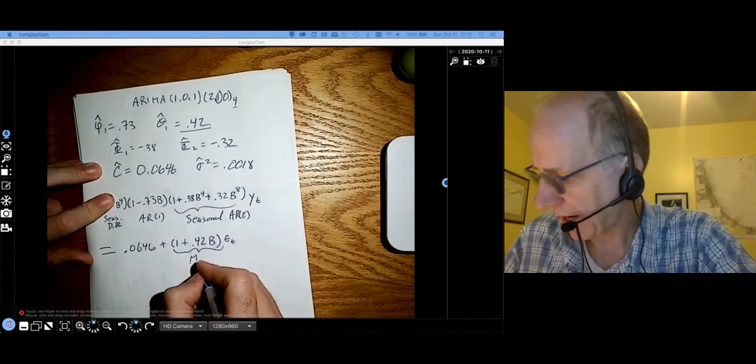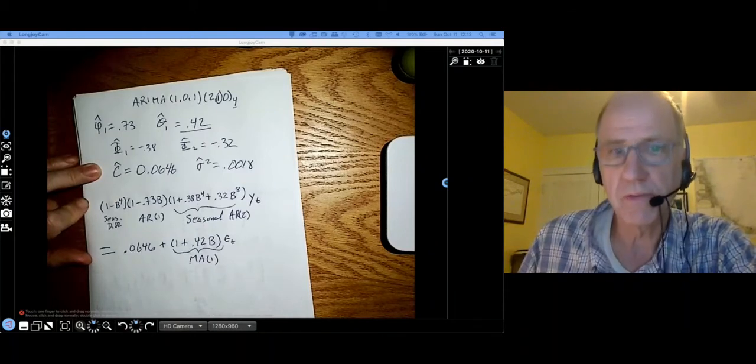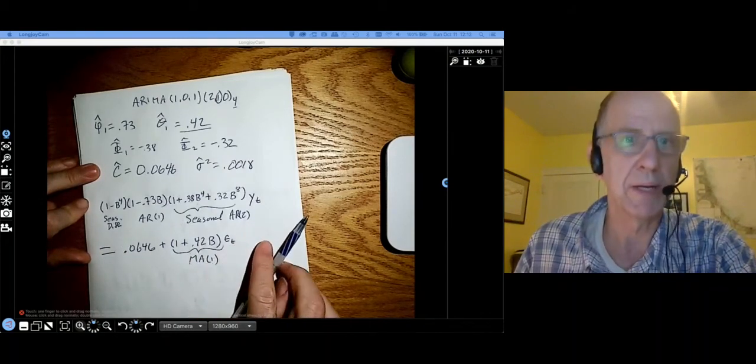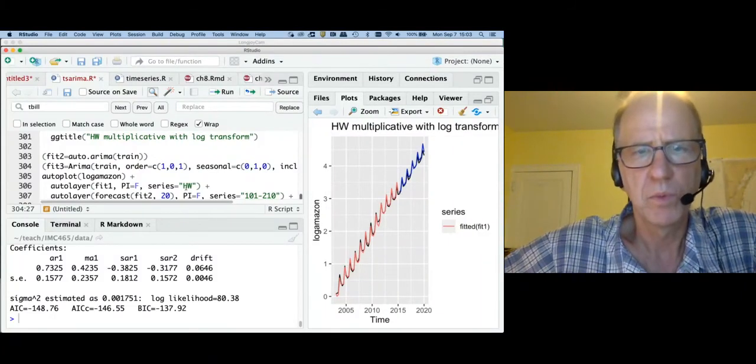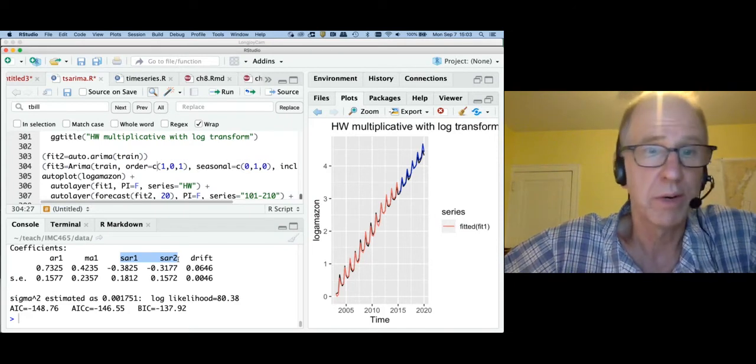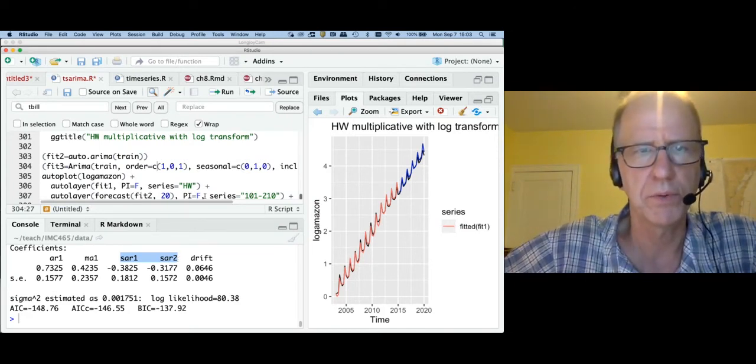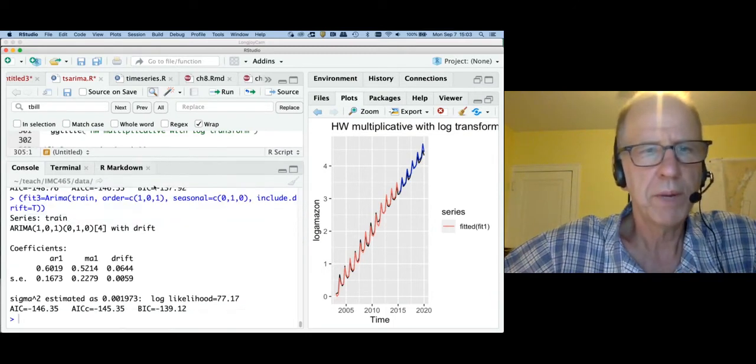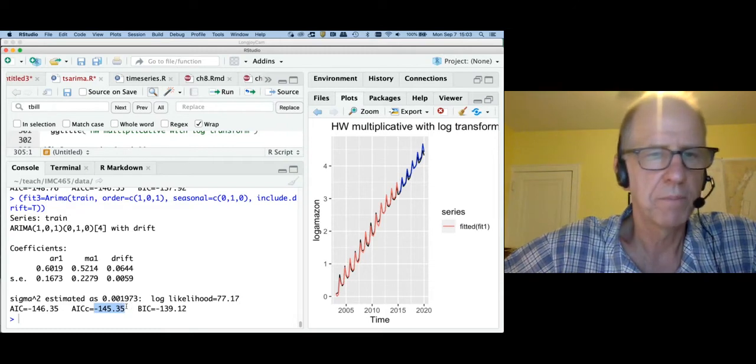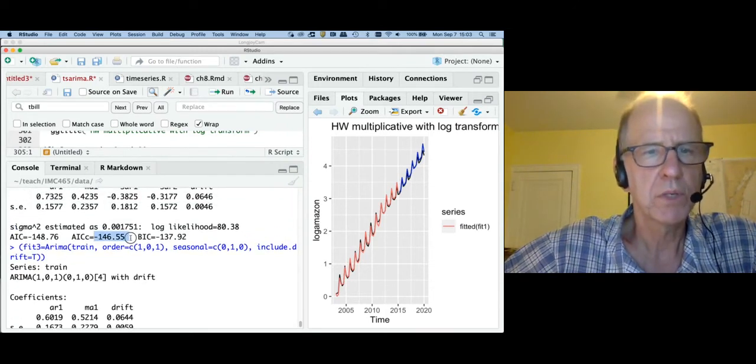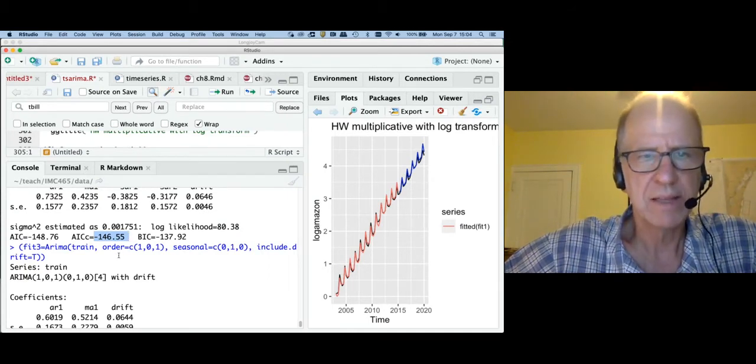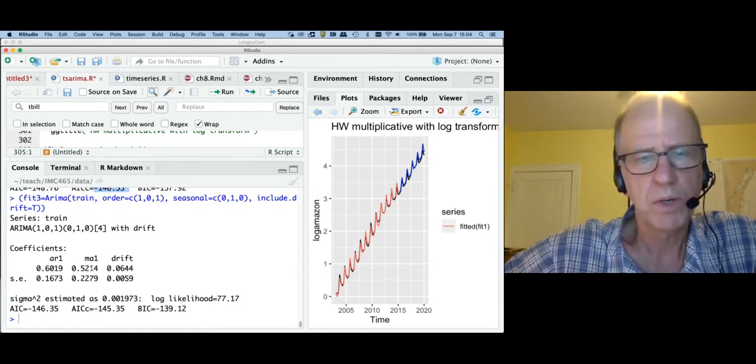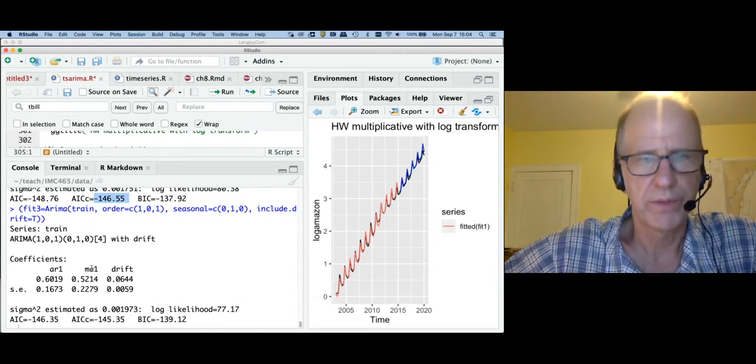The backshift notation is really convenient for writing out these models. And I encourage you to use it. Of course, we could multiply this out, but that would be a real mess. I kind of like parsimonious models. Do we really need these two seasonal autoregressive terms? I'm going to get rid of them. Let's just see how we do without those. We'll keep the drift term, but now notice those two seasonal effects went away. If we compare the two models, the corrected AIC is about minus 145. The previous one was minus 146. So there's not a lot of difference. You want AIC to be small. The model that auto.arima chose is a little bit better than the more parsimonious model that I chose. But I'm not sure it's worth it. The difference is pretty small. That's a judgment call that we'd have to make.